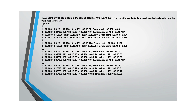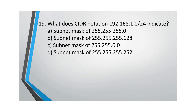Question 18: A company is assigned the IP address block 192.168.10.0/24. They need to divide it into four equal-size subnets. After calculating, option A is correct. You can solve this question in your copy as it is very important for your exam preparation.